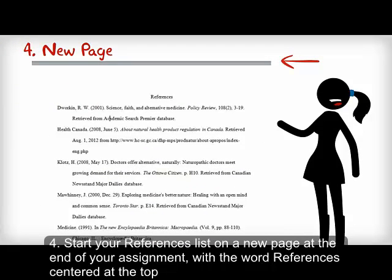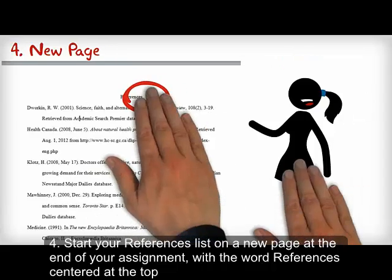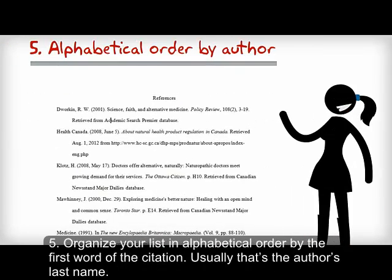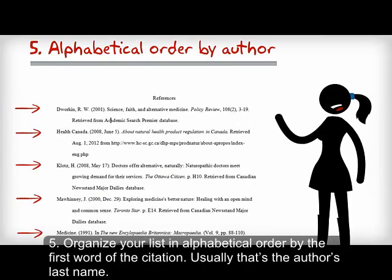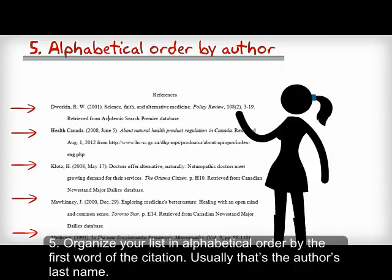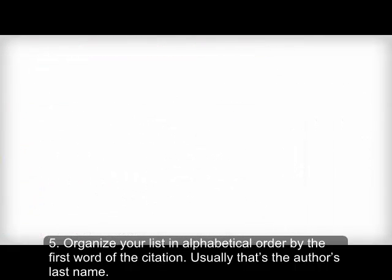Tip 4: Start your references list on a new page at the end of your assignment with the words "references" centered at the top. Tip 5: Organize your list in alphabetical order by the first word of the citation. Usually that's the author's last name.